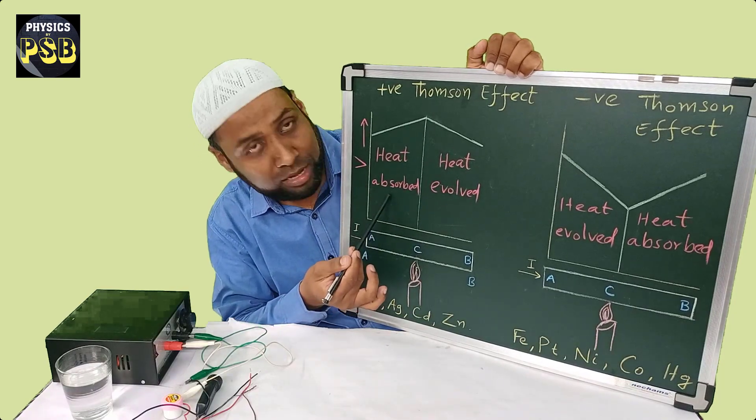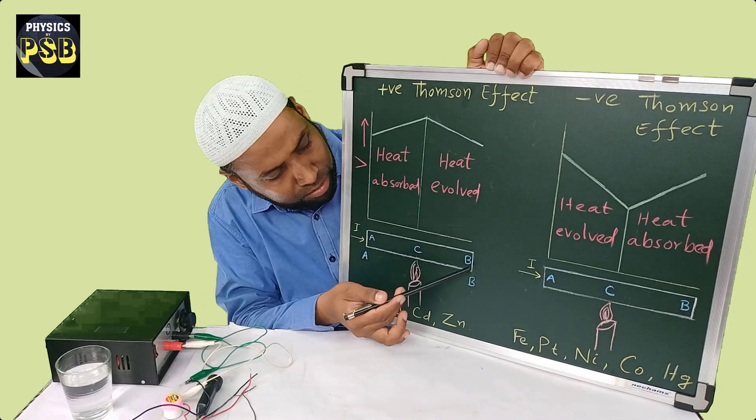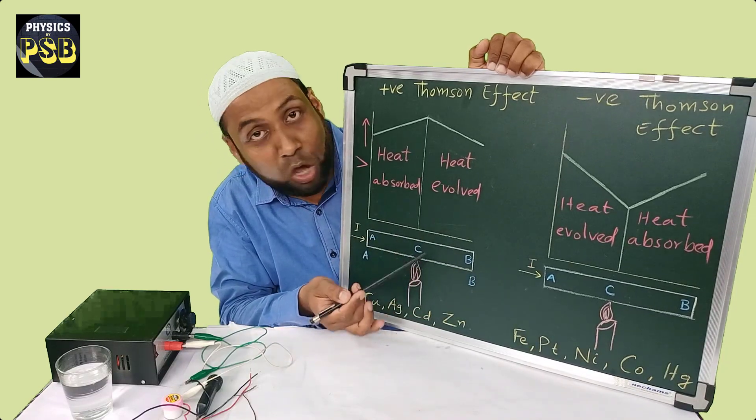That means, this is the cold region. Whereas here, B to C, heat is evolved. So this region is hot.